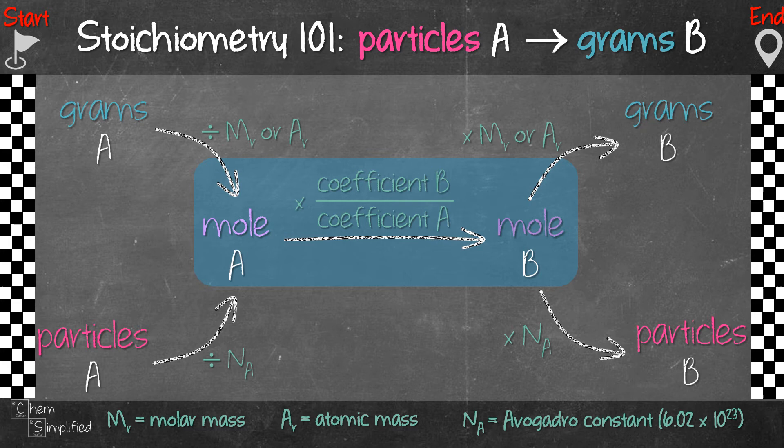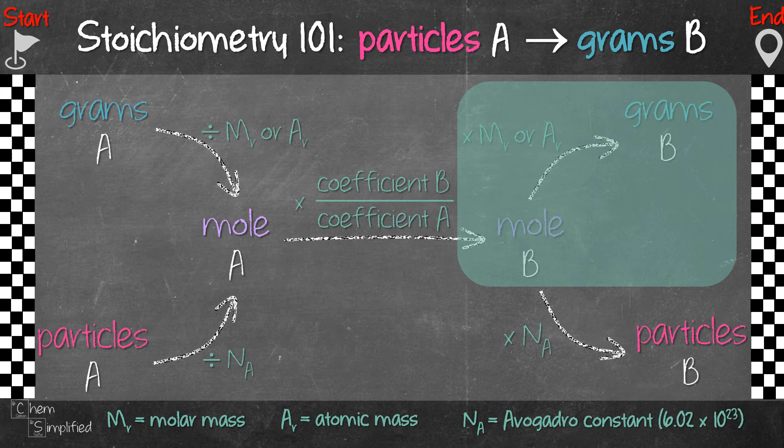And once we find the mole of B, we can then go to our final destination which is the grams of B by multiplying with the molar mass of B. So it's not so scary, right?